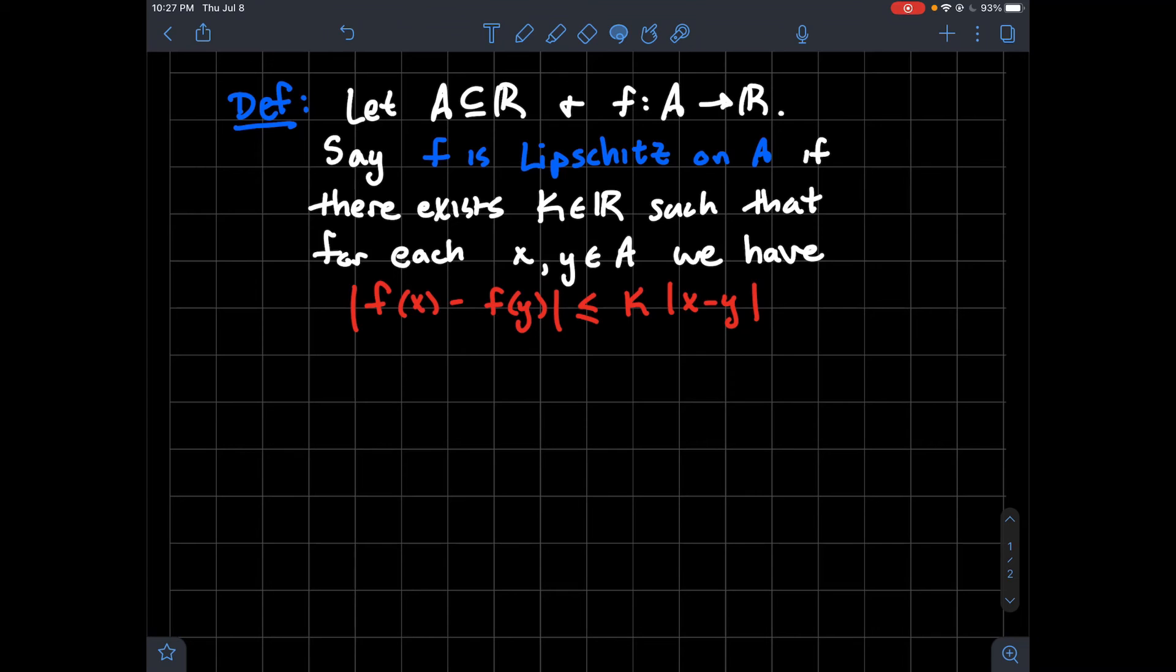Remember on the real line we can take the absolute value of the difference between two numbers to be the distance between them. Some things to point out: that k has to work for any pair of points x and y that is in A. So that is important.